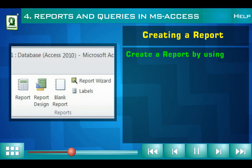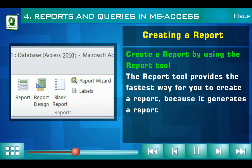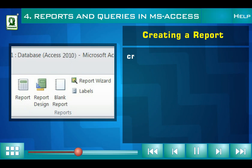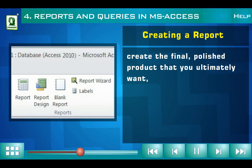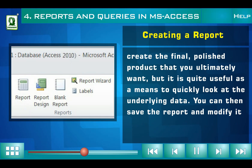Create a report by using the Report Tool. The Report Tool provides the fastest way for you to create a report, because it generates a report immediately without prompting you for information. The Report Tool may not create the final polished product that you ultimately want, but it is quite useful as a means to quickly look at the underlying data. You can then save the report and modify it so that it better serves your purposes.